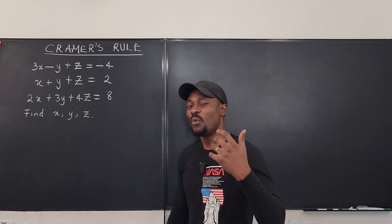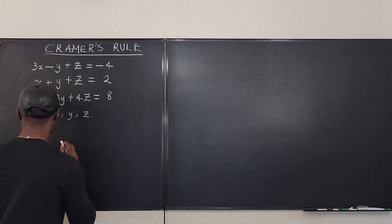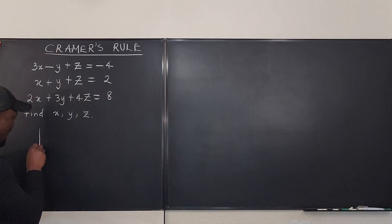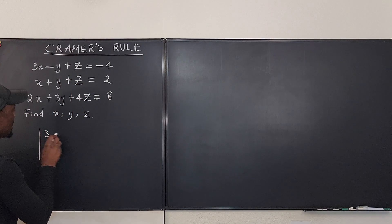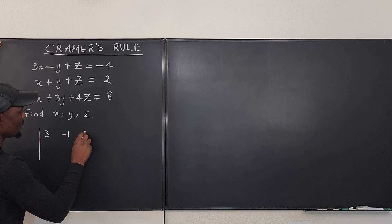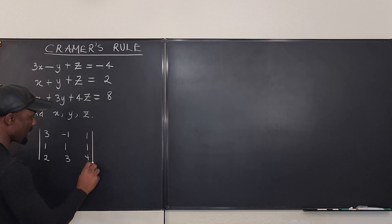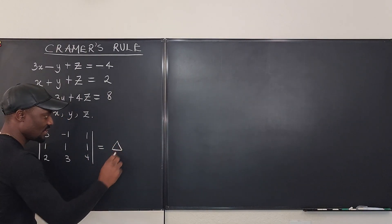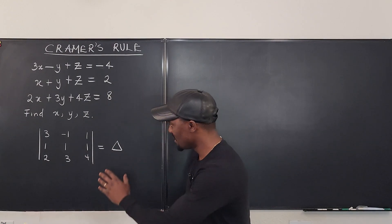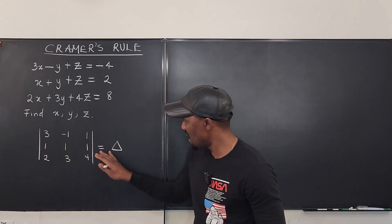Let me state first what Cramer's rule says. Cramer's rule says that you generate a matrix from this system. You find the determinant of the coefficient matrix — you have 3, -1, 1 in the first row; 1, 1, 1 in the second; and 2, 3, 4 in the third. If you compute the determinant of this — call it delta (the triangle symbol) — that is the determinant of the coefficient matrix.